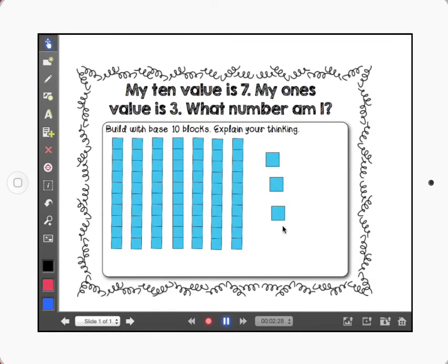So now I have 3 ones. So let's count and see what number I have that's represented here. I have 10. I'm going to use my pen. 10, 20, 30, 40, 50, 60, 70, 71, 72, 73. I have 73. And that is my number.